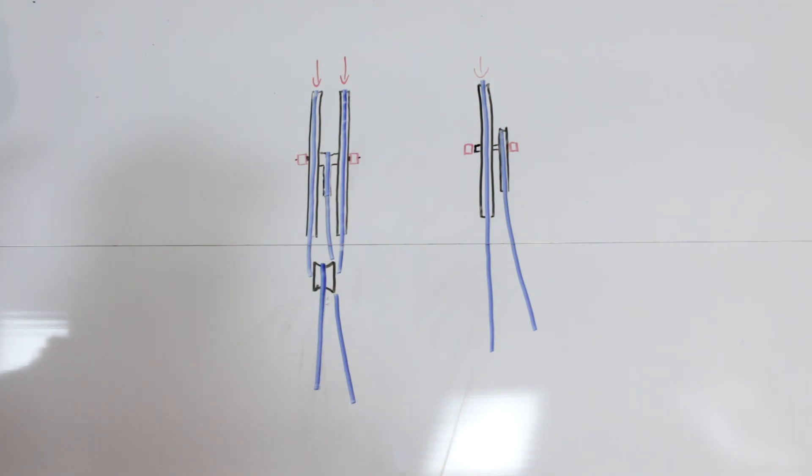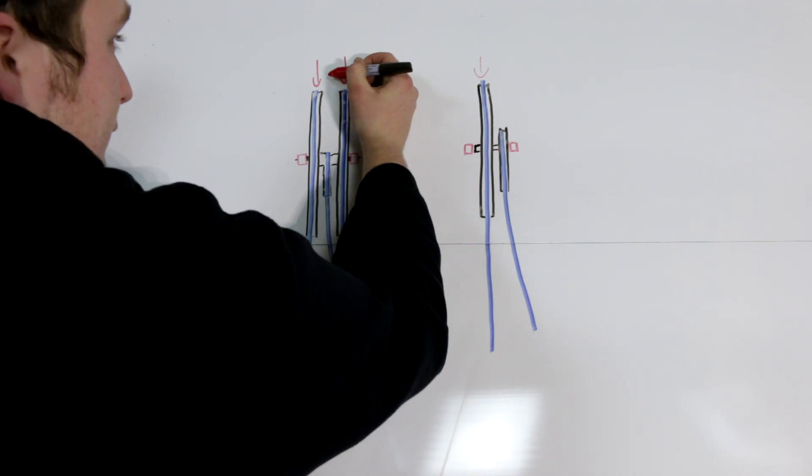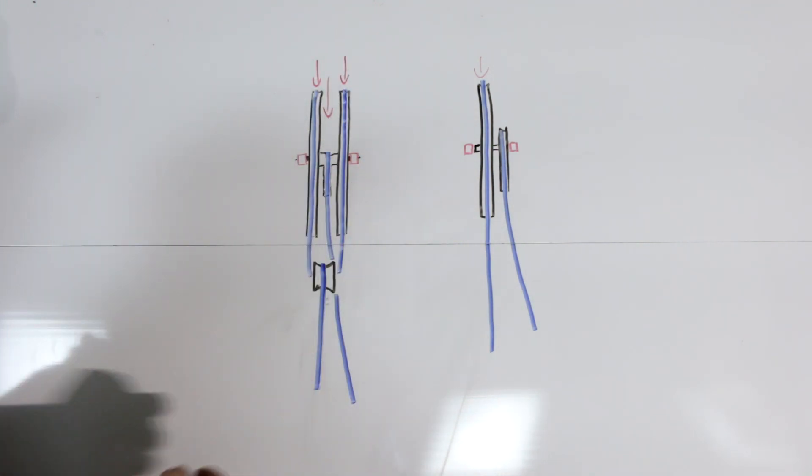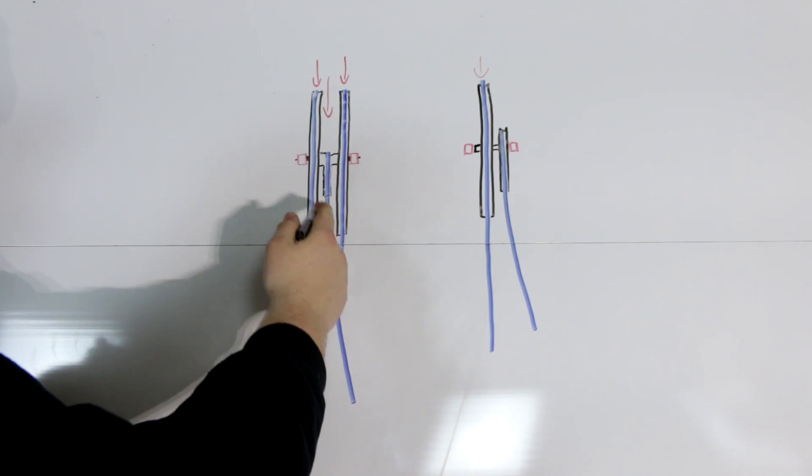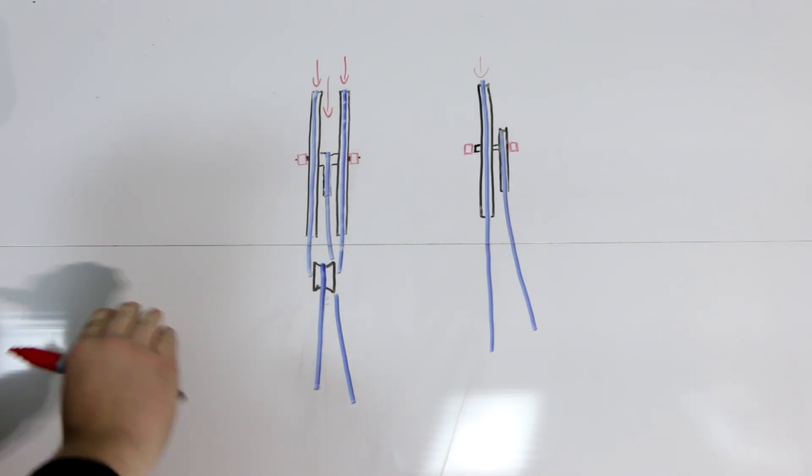So on the Prime system, your cable track is still right down the center of your limb. So even at full draw, the majority of that weight is still being pulled right down the center of the limb. Therefore you have no cam lean.